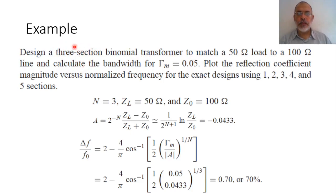This means that the number of sections is three, the type of transformer is binomial transformer, ZL is 50 ohm and Z0 is 100 ohm. And calculate the bandwidth for maximum reflection coefficient gamma maximum equals 0.05.